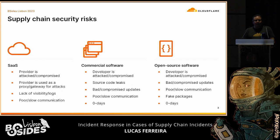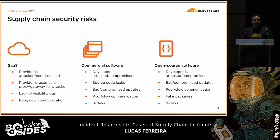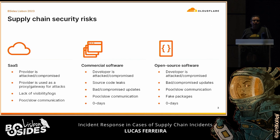What are the main risks or the main issues with supply chains? I classify supply chains in three pillars: software as a service, commercial software, and open source software. A lot of the risks are similar, but there are specific details that we need to be careful about when dealing with any of those different types of supply chains.